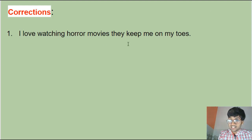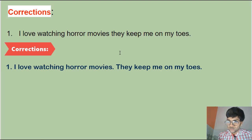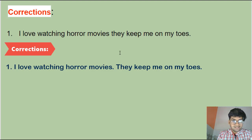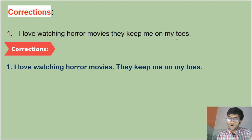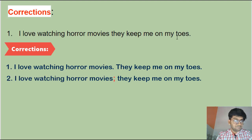Let's correct 'I love watching horror movies they keep me on my toes.' Method one: use a period — 'I love watching horror movies. They keep me on my toes.' That's the easiest way. Method two: use a semicolon. Both sentences are closely related and talking about the same thing — horror movies — so we can use a semicolon: 'I love watching horror movies; they keep me on my toes.'